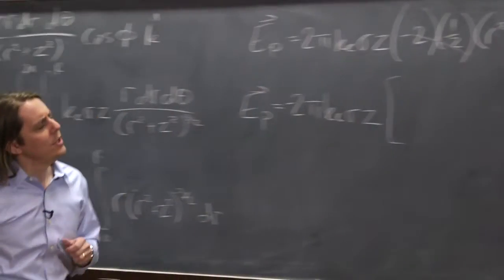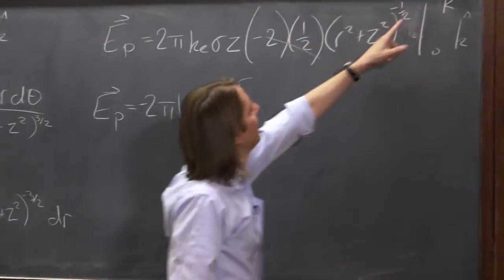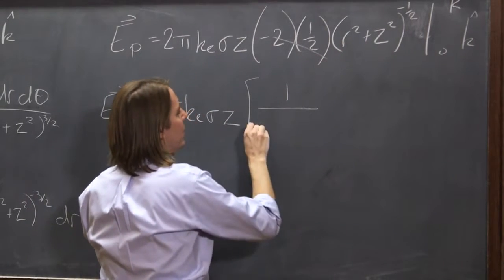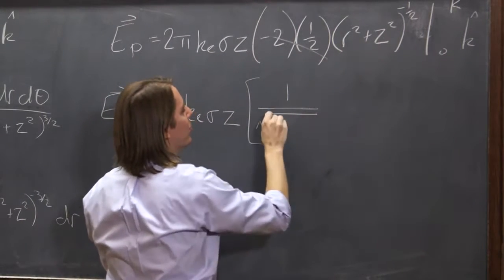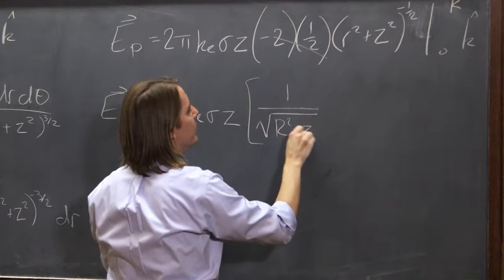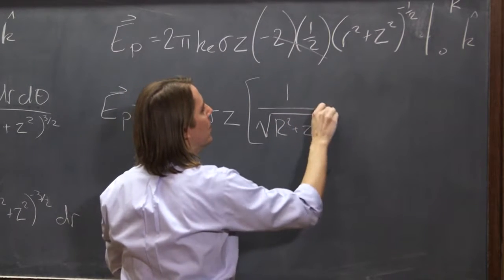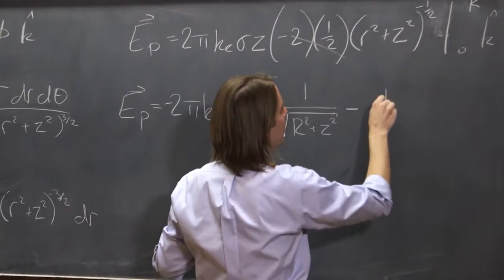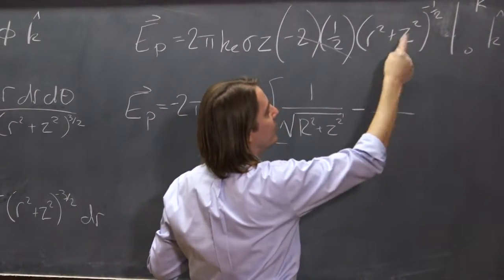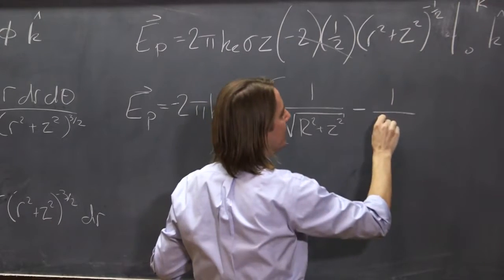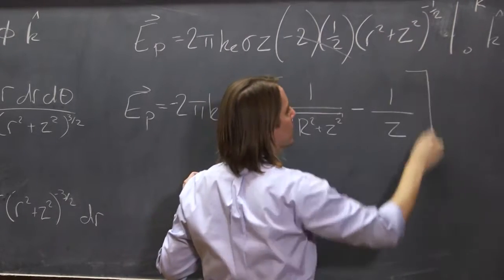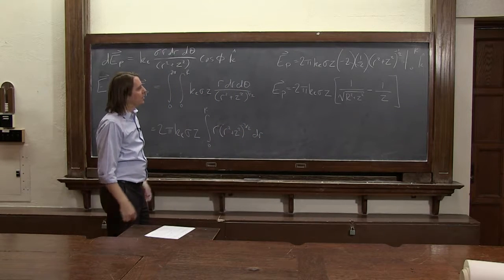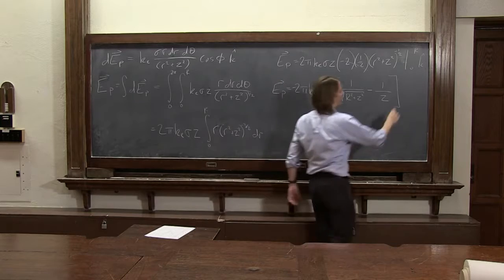And now we plug in big R into the little r. So that becomes 1. I'll go back to quotients now. 1 over big R squared plus z squared minus, and now we plug in the 0 for the r, minus 1 over the square root of 0 plus z squared. Oh, that's just z. Once the r goes away, it's just the square root of z squared. So that's just z in the k hat direction because of symmetry.